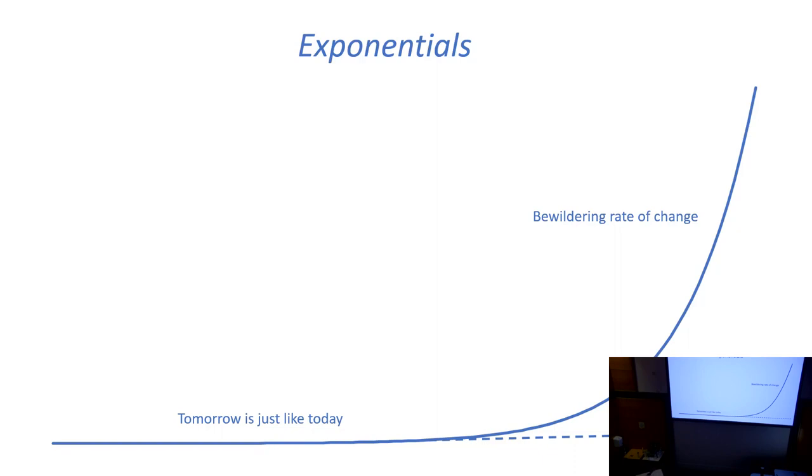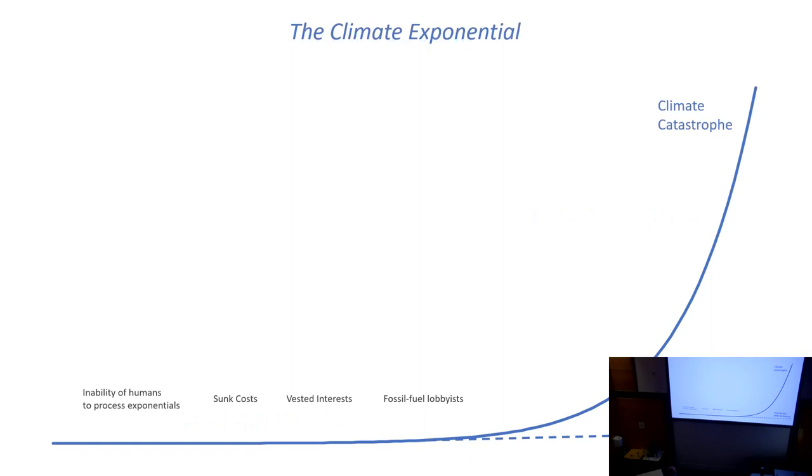We all know in this well-informed audience what an exponential is. It looks like this - the first half, things are doubling but that feels linear. The second half has a bewildering rate of change we can't process. We think this dotted line is going to continue, and suddenly the exponential kicks into the second half and it's all very bewildering.